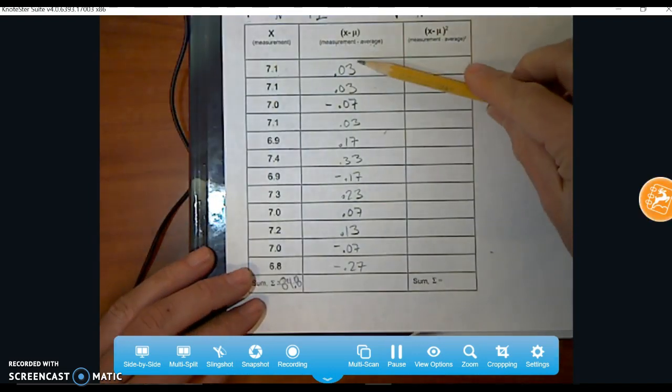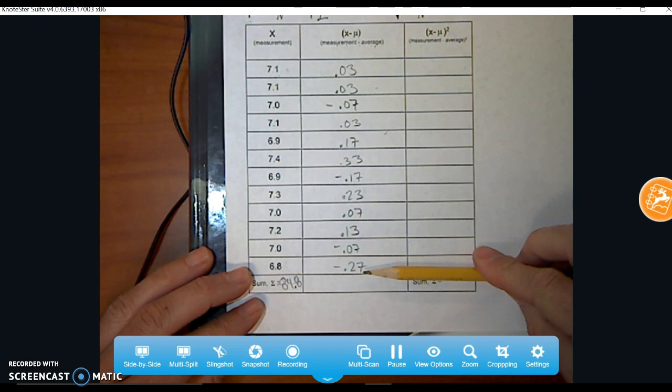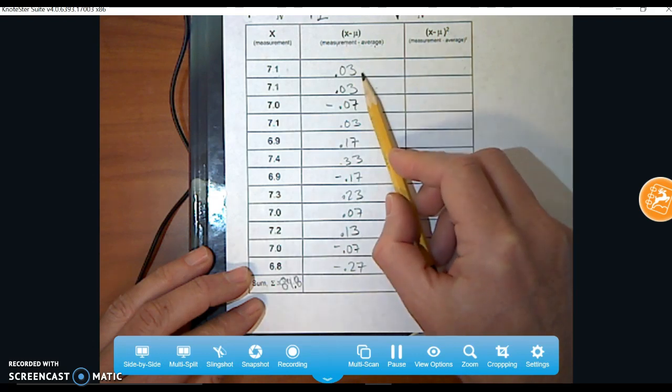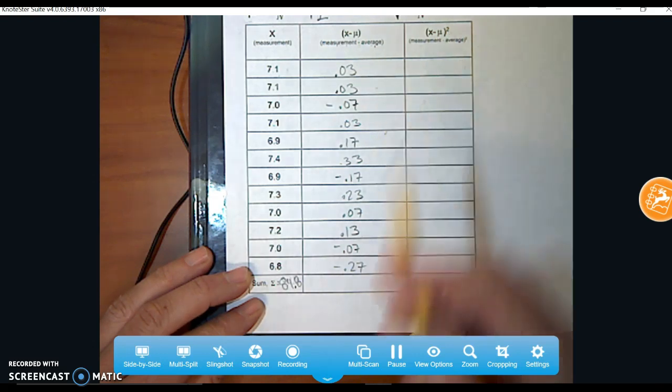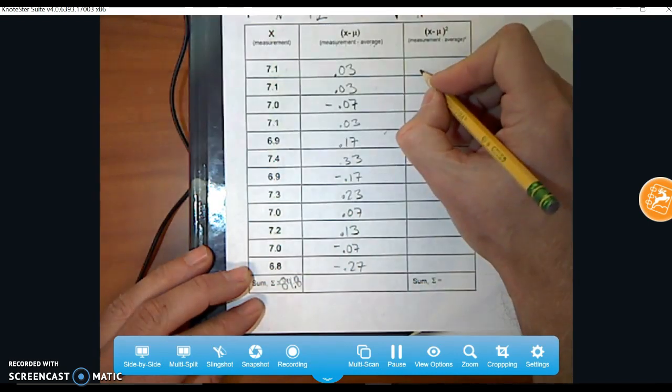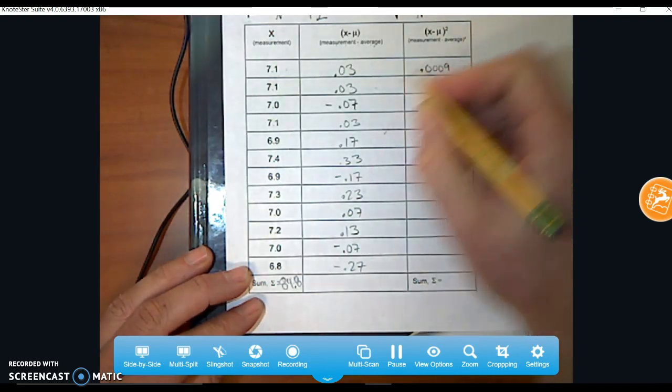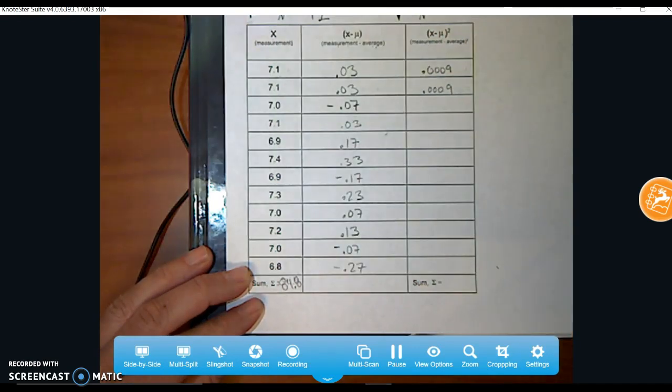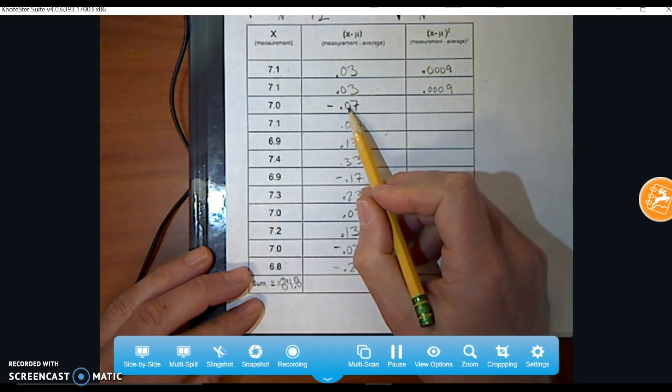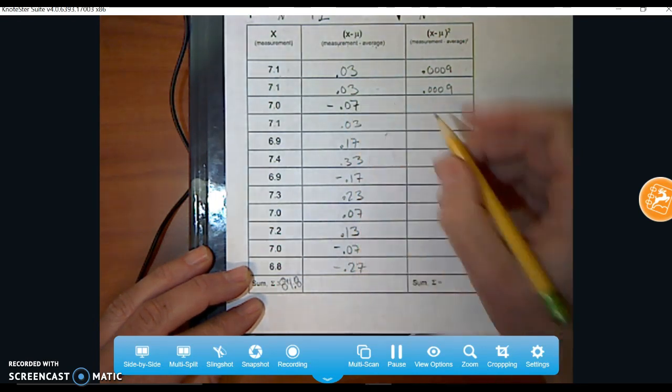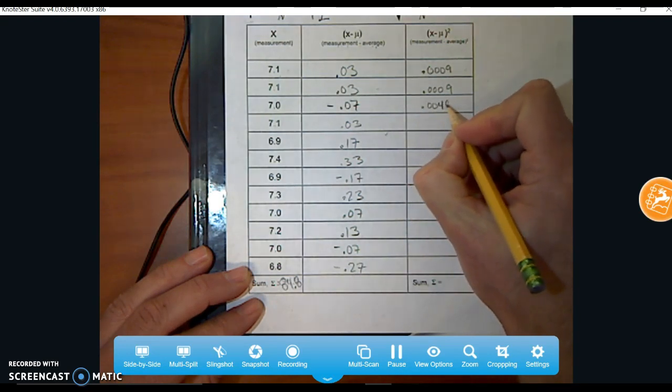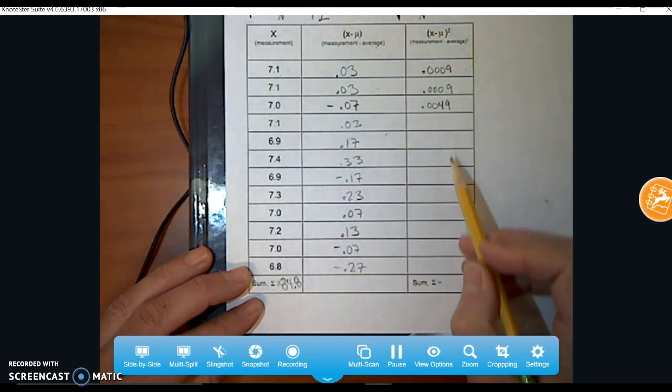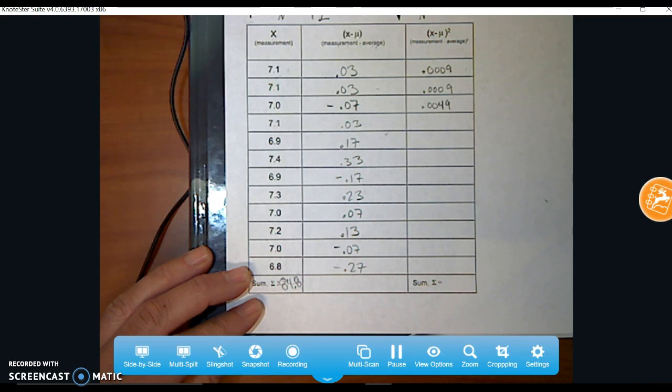All right. So there's mine all populated, lickety-split. And next thing I want to do is I want to take this value, the measurement minus the average, and I simply want to square it. That means I'm going to multiply it by itself. So 0.03 times 0.03, that's going to give me 0.0009. That's the same thing. 0.03 times 0.03 will give me 0.009. Here, 0.07 times, or negative 0.07 times negative 0.07, that's going to give me 0.0049. So you'll notice when we square it, we should get rid of all these negative numbers. These should all be positive. So take a moment and do that with your data.